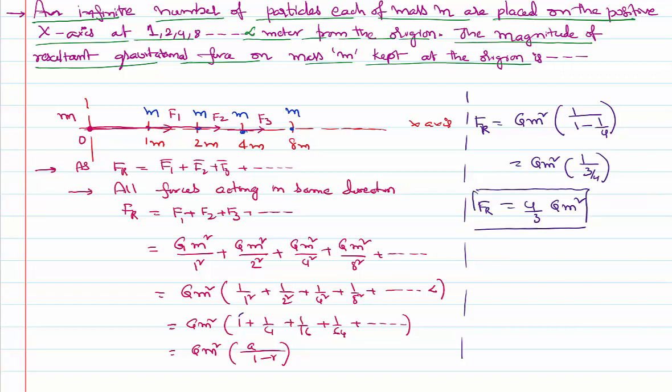This is the resultant force acting on the identical particle of mass m kept at the origin, where there are infinite particles at 1, 2, 4, 8 meters and so on up to infinity. Thank you for watching, keep coming back for more video lessons.